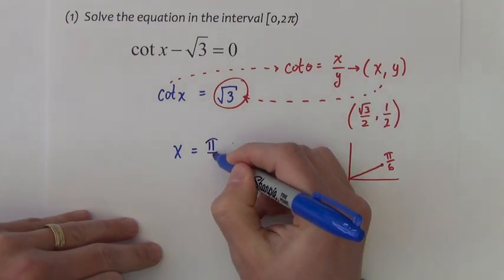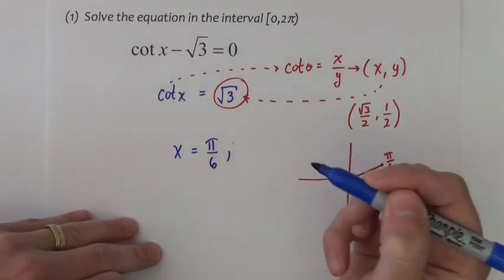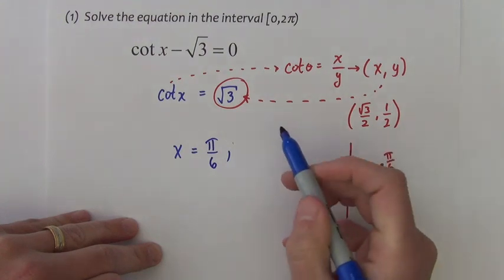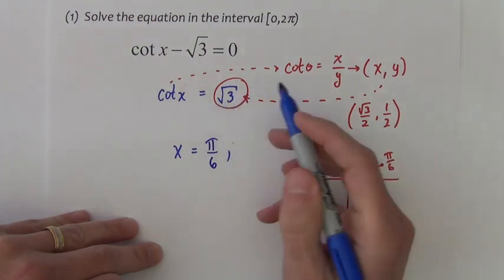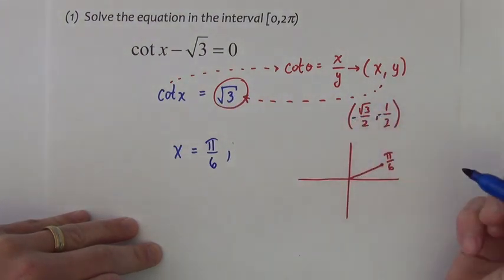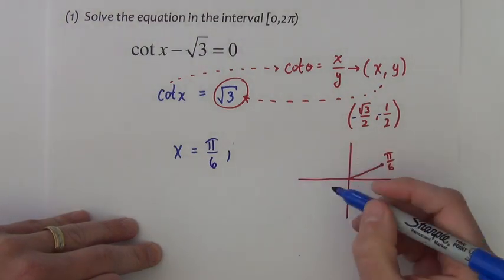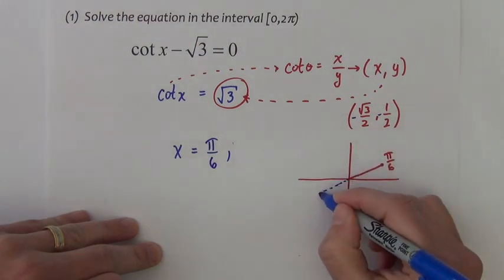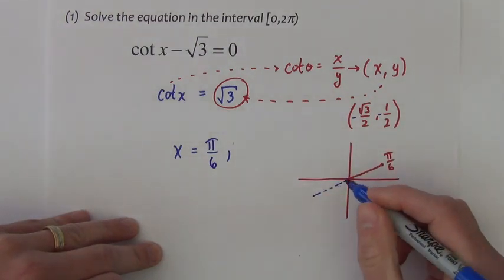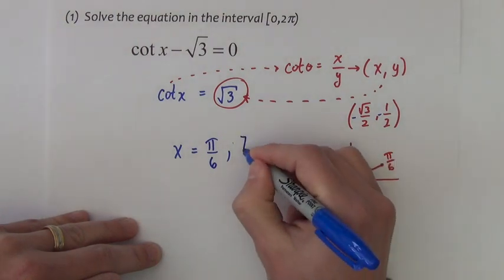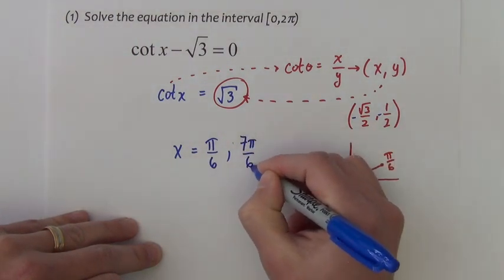So that's an answer. There's one other answer. I could also have it come out to be positive square root of 3 if both of these were negative, if it was to the left and down. That angle is 7π over 6.